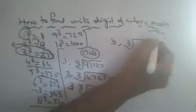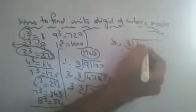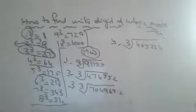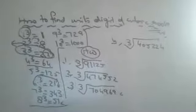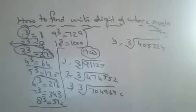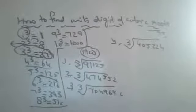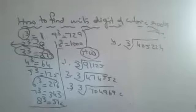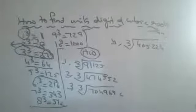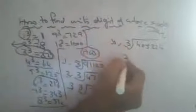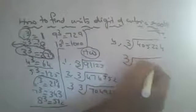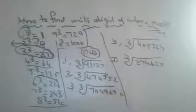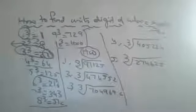Find the units digit of the cubic root of 405224. Last question: find the units digit of the cubic root of 274625.